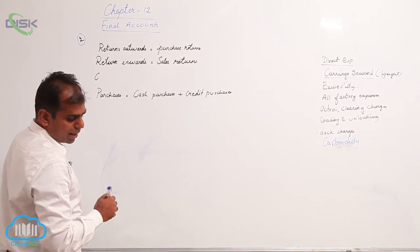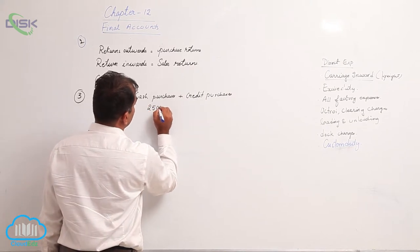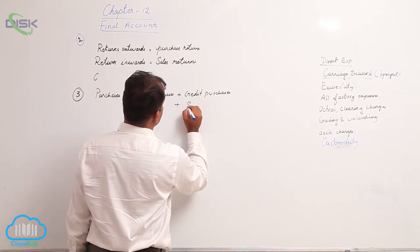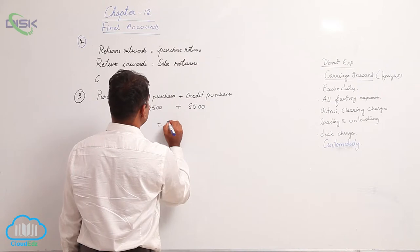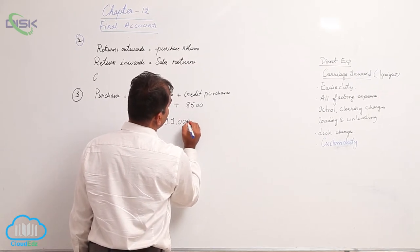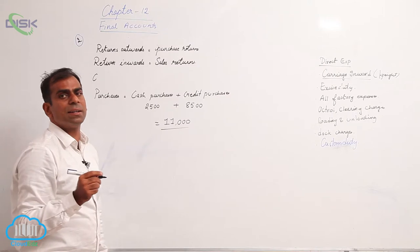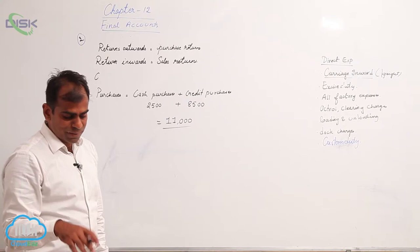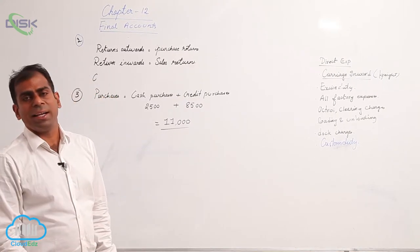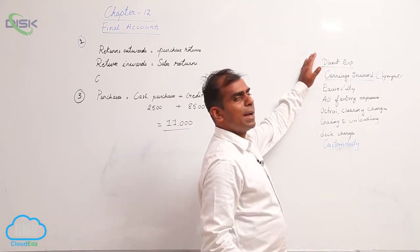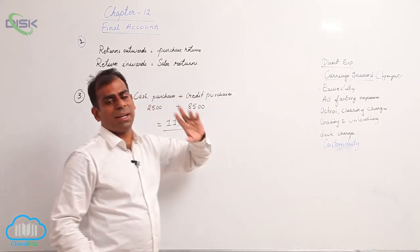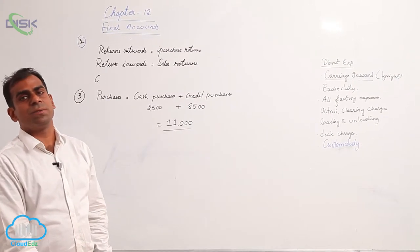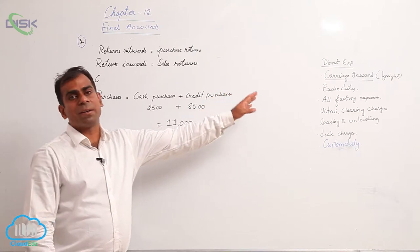Your cash purchases are 2,500 and your credit purchases are 8,500. So your total purchases would be 11,000, which you will be taking on the debit side of the trading account in the inner column and minusing the purchase returns, which is around 750. Then there is mention of factory lighting — all factory expenses are direct expenses, so we would take that also in the trading account. Similarly, oil and fuel, because it is mostly used in factory, becomes part of your factory expense.